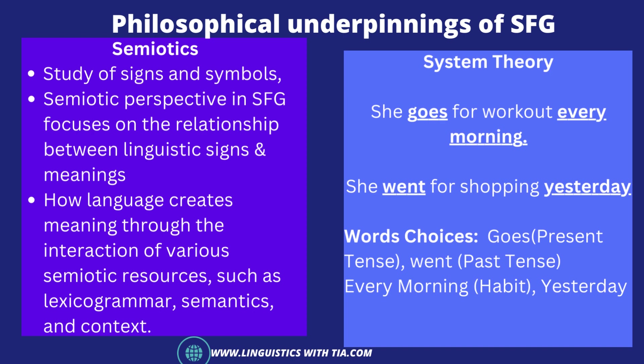SFG incorporates principles from semiotics — the study of signs and symbols — to understand how language represents meaning. It recognizes that language is not just a vehicle for conveying meaning but is itself a meaning-making system. The semiotic perspective in SFG focuses on the relationship between linguistic signs — words, phrases, and clauses — and the meanings they represent. It explores how language creates meaning through the interaction of various semiotic resources like lexicogrammar, semantics, and context. Semiotics is all about symbols and signs used for conveying meaning.